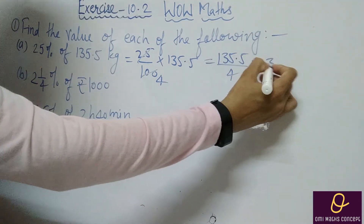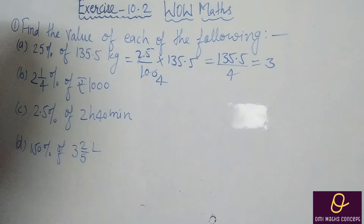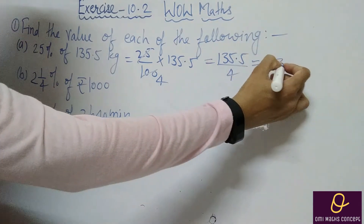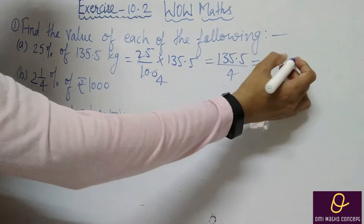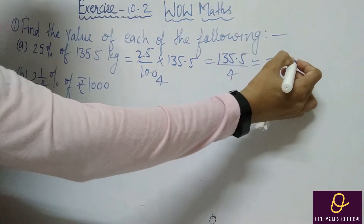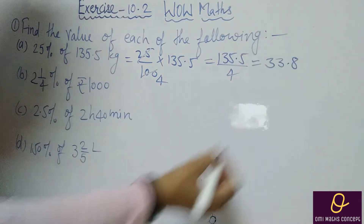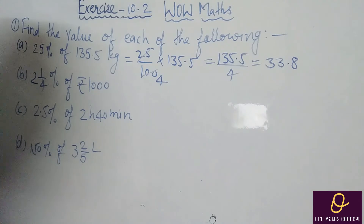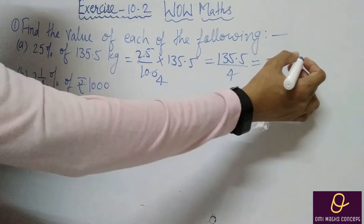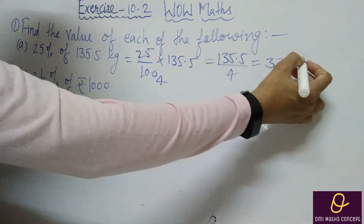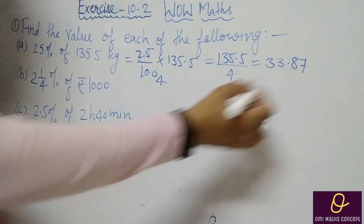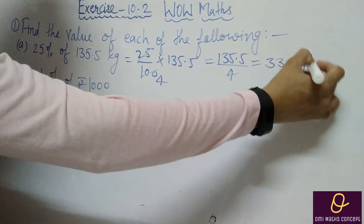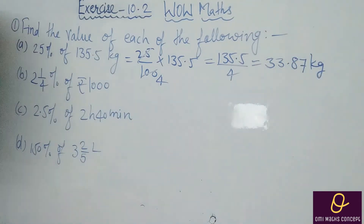Now we will divide 135.5 by 4, giving us 33.875, which rounds to 33.88 kg. I have done this up to 2 decimal places.